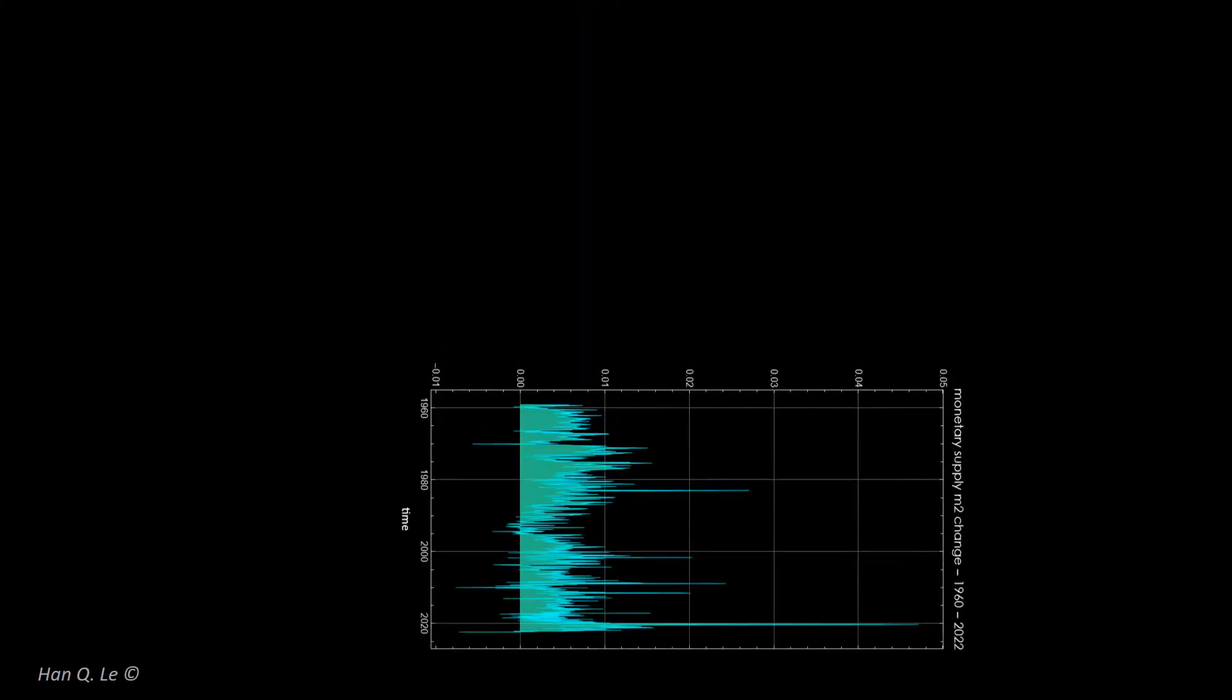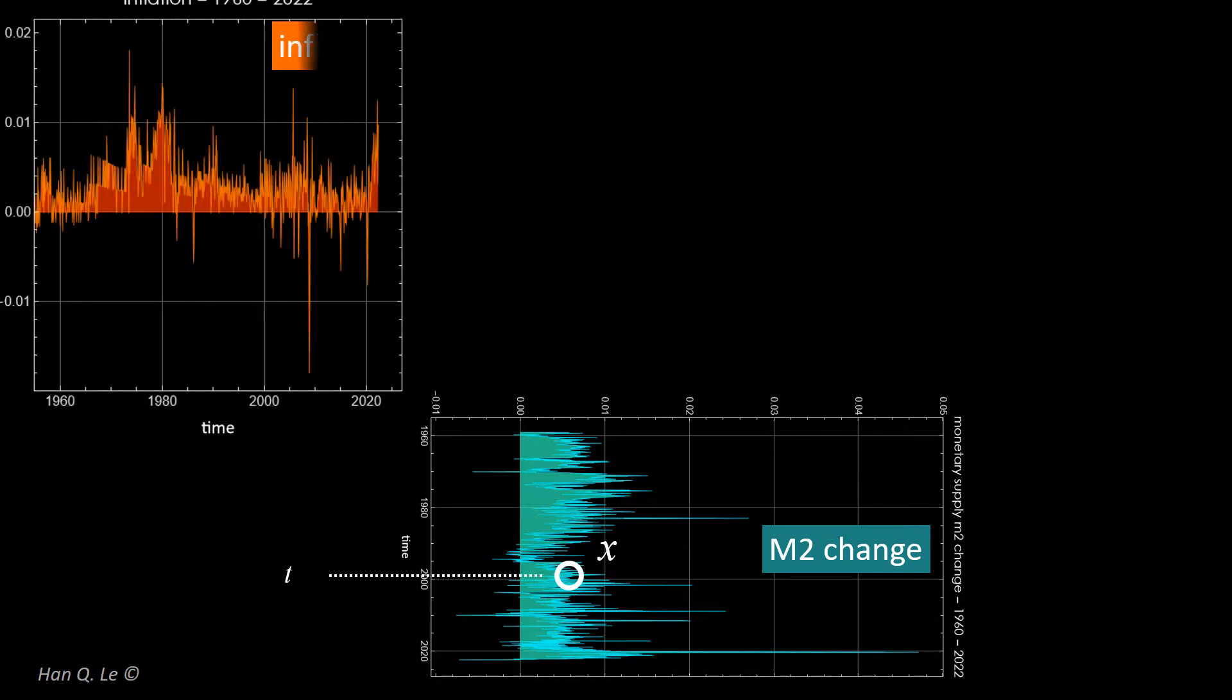Consider the change of M2 versus time. The graph is shown horizontally for a reason that will be clear shortly. At a given time t, let the value of M2 change be x as shown. Consider the inflation. At the time t plus tau, where tau is a variable to be determined later, let the inflation value be y. X and y together form the coordinates of a point.